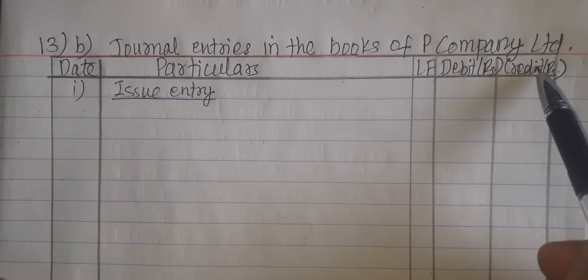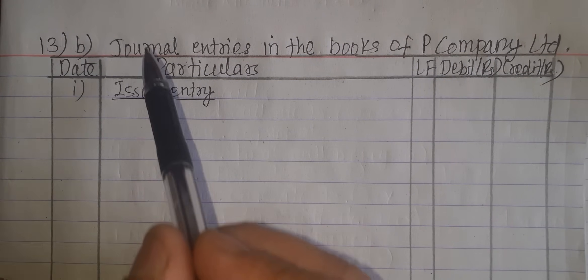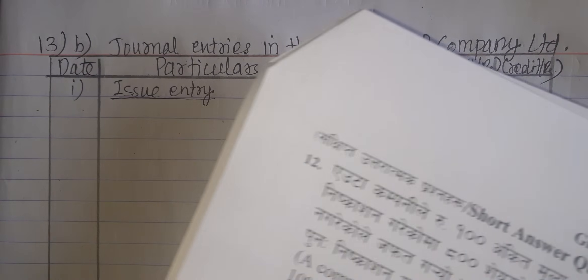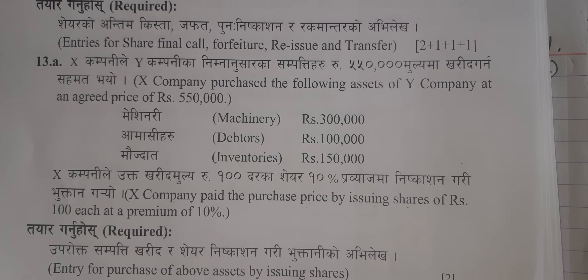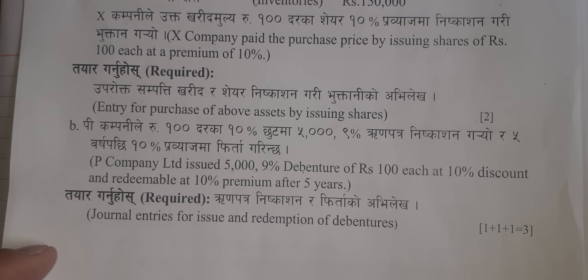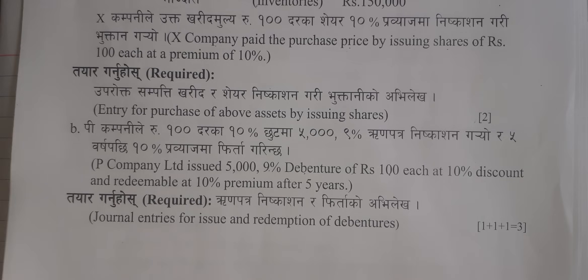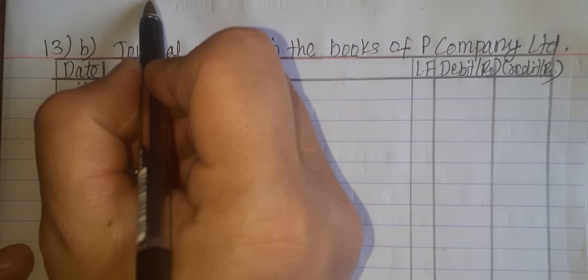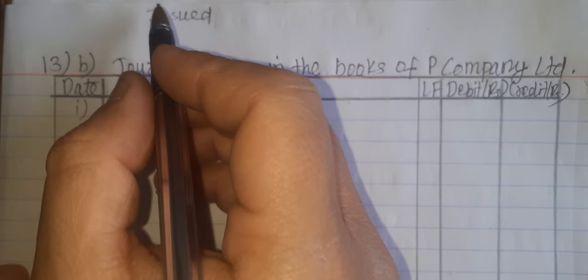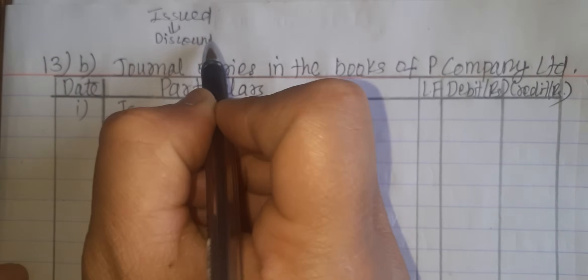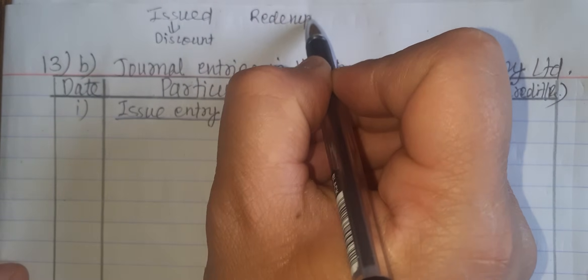Journal entries in the books of P Company Limited. This format covers the issue entry — the issue is to use the money and to pay the money — and the redemption entry is to pay the money back. This question is about discount on issue and redemption at premium.